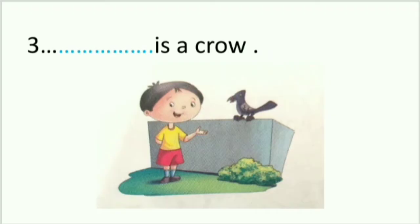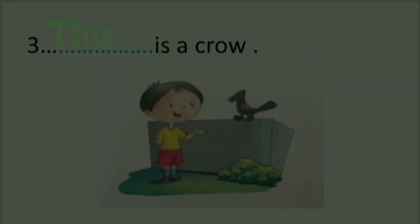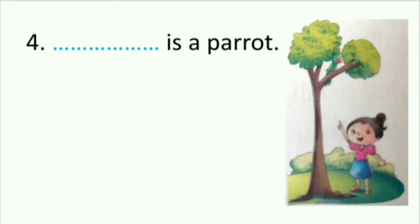The third one: dash is a crow. The boy is pointing at the crow which is nearby, so the thing that is nearby we write T-H-I-S, 'this'. The fourth one: dash is a parrot. A girl is pointing at the parrot which is on a tree and the parrot is very far from the girl, so for the animal which is far away we write T-H-A-T, 'that'.